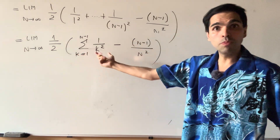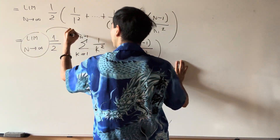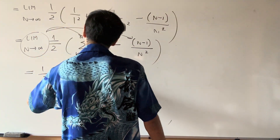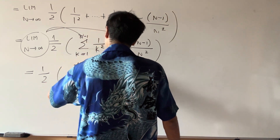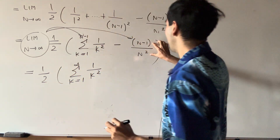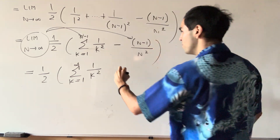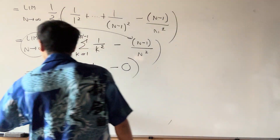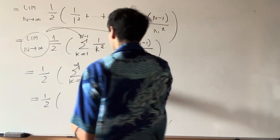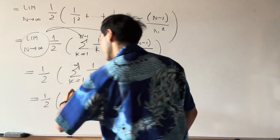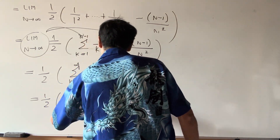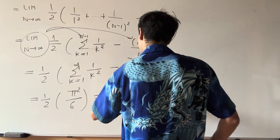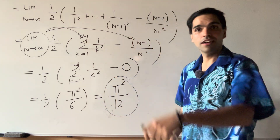What we end up getting: the limit as n goes to infinity of n minus 1 over n squared goes to 0, because the numerator has degree 1 and denominator degree 2. So in the end we get 1 half times the sum from k equals 1 to infinity of 1 over k squared, which is pi squared over 6. So the integral is not 1 — it is pi squared over 12.